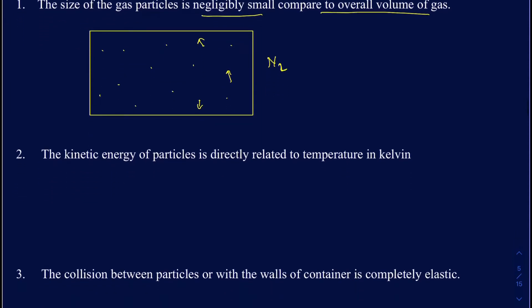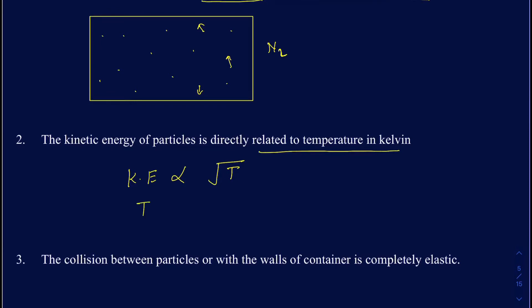The second criteria is that the kinetic energy of the gas particles is directly related to the temperature — specifically the square root of temperature in Kelvin. If temperature goes up, kinetic energy goes up, and velocity also increases. When kinetic energy increases, the velocity of the molecules increases, because kinetic energy comes with motion — if something has higher kinetic energy, it's moving faster. In real life, when you heat something up, molecules move faster, meaning they have higher kinetic energy.